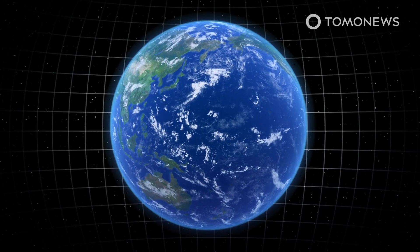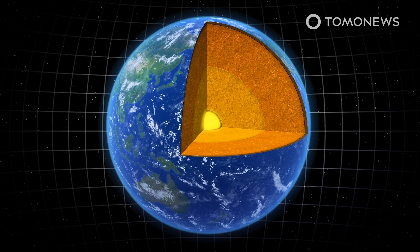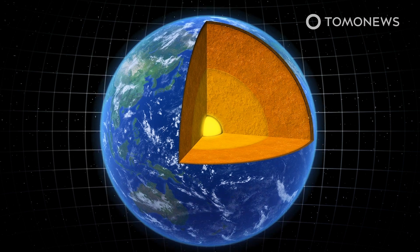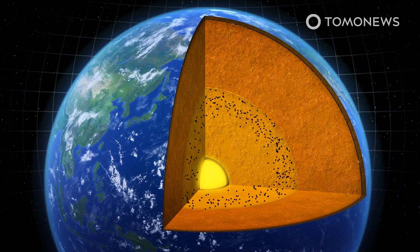A study published in JGR Solid Earth says that it is snowing iron at the Earth's core because molten iron crystallizes in the outer core before the substance sinks downwards.